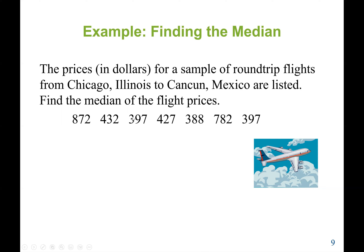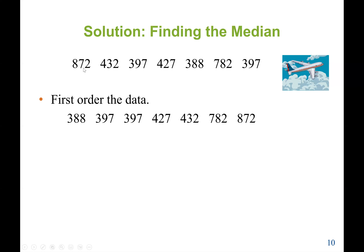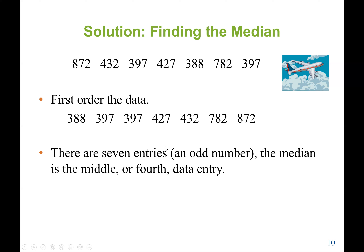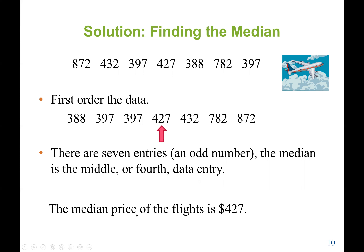We have seven flight prices — an odd number — so the median will be one middle value. First, we sort the prices in ascending order: 388, 397, 397, 427, 432, 782, 872. Now the prices are in increasing order. The middle value is 427. Since we have seven entries, which is odd, the median is the fourth value, which is 427. So the median price of the flight is $427.